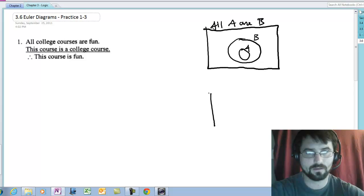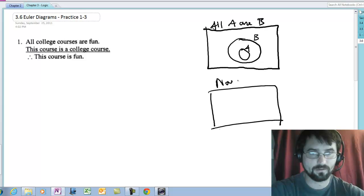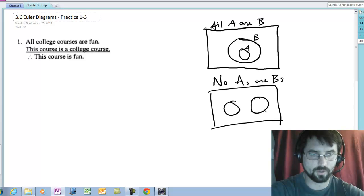If we want to draw no A's are B's, then we draw them as disjoint sets, where this is A and this is B.